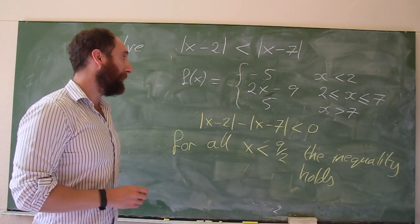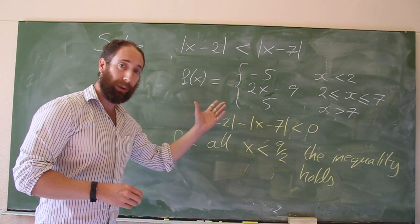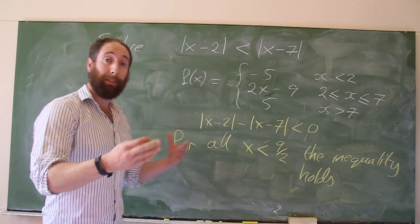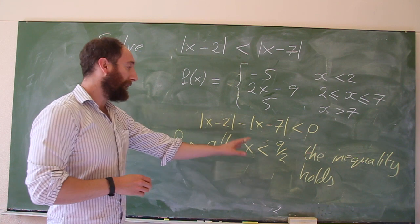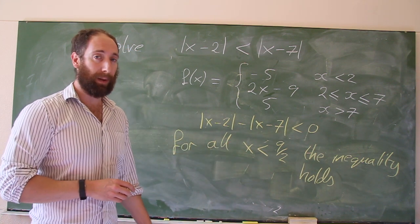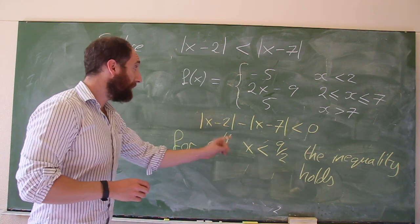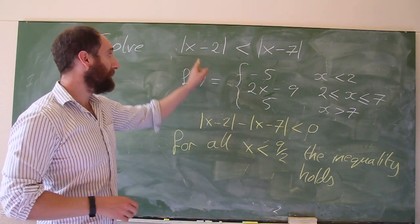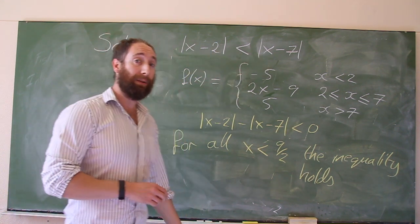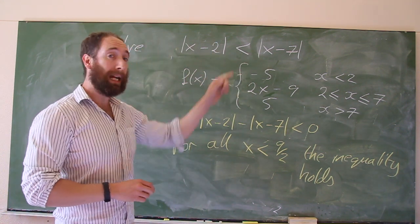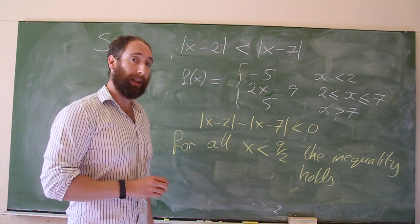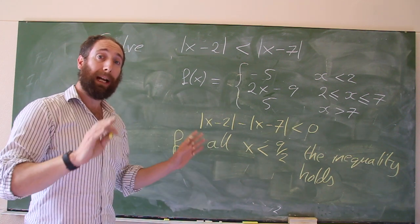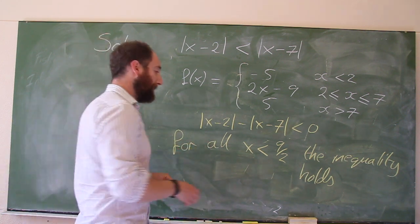This is the same answer that we came up with using the graphical method, the intuitive method, and the method using basic properties of inequalities — and now we've found it the third way. The nice thing about this method is that had we had an equation with not just two absolute values but three, we could have done the same thing. Let's look at a very quick example.